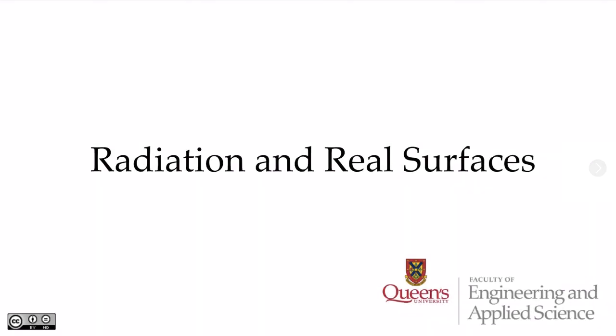In this video, we're going to look at radiation from real surfaces. We're going to find some important surface properties relevant to radiation, including the reflectivity, the absorptivity, the transmissivity, and the emissivity. We'll also look at the surface energy balances, and finally we'll look at some radiation in enclosures in order to come up with some very important relations to relate the absorptivity and the emissivity.